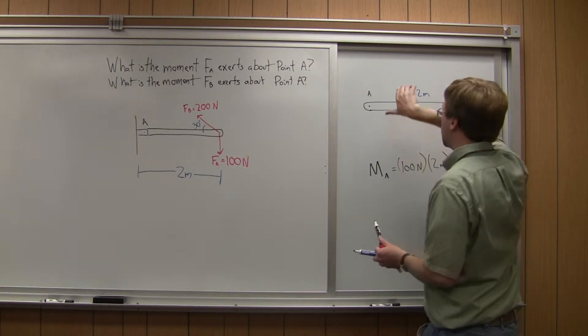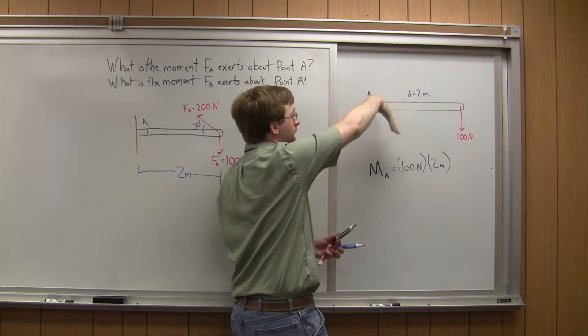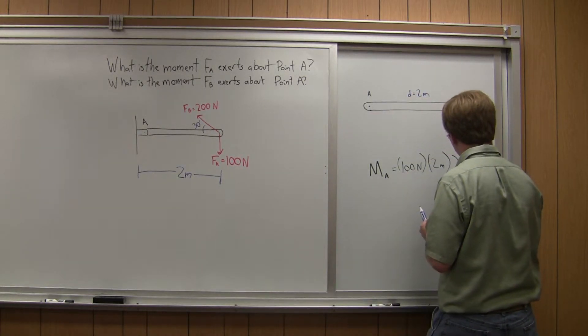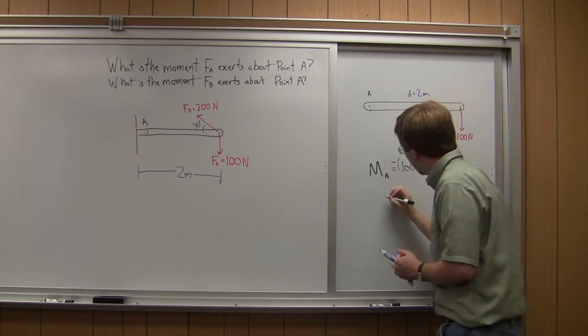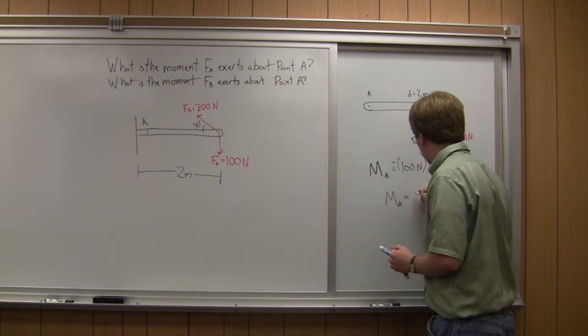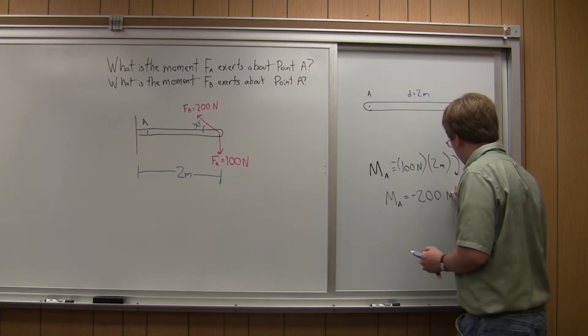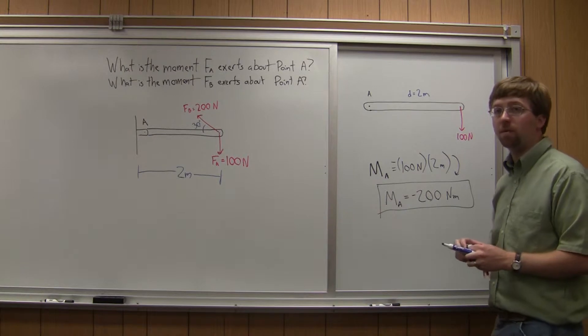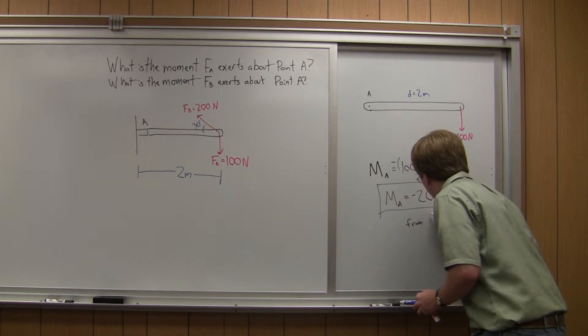And that moment would cause a rotation clockwise about point A. So if we imagine this beam, it'd start rotating clockwise based on this force. So the clockwise rotation, that's going to be a negative moment. So this whole thing gets a negative. So MA, the moment about A from force A, is going to be equal to negative 200 newton meters. So there we go with the moment about A, and this is from force A.